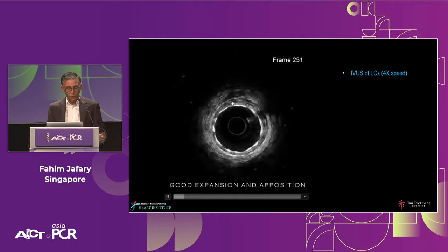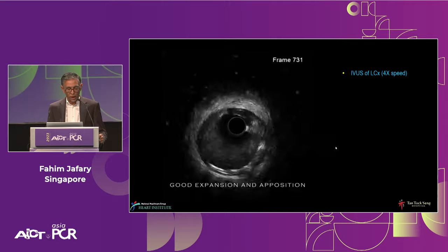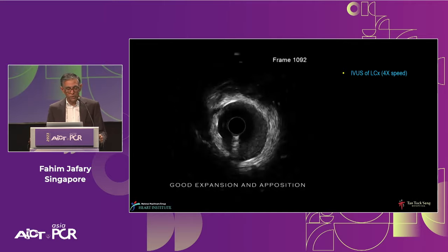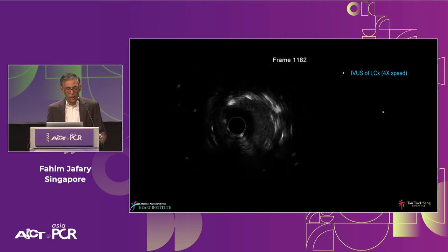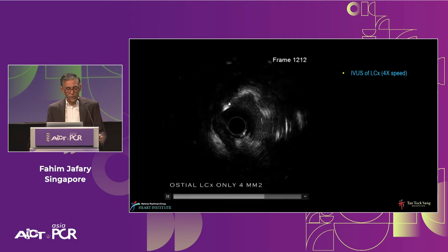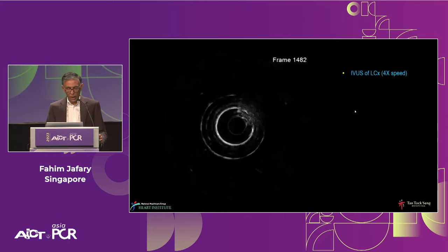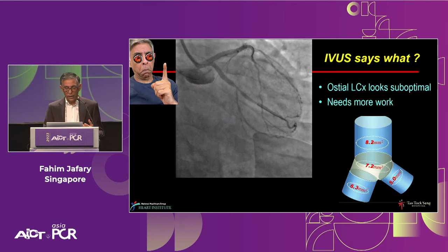We put in an IVUS, and at high speed: the stent in the circumflex looks pretty good with good expansion and apposition. Coming proximally the stent looks really good until we hit the ostium. At the ostial circumflex the stent area was around 4 mm² — not what we want. We know from data we want a higher lumen. The IVUS is telling me the ostial circumflex looks suboptimal — not even close to the 5-6-7-8 algorithm the Korean group proposed.